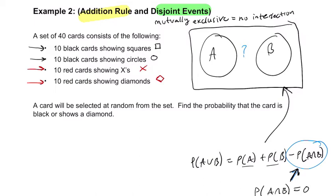It's got to be one or the other: either it's black, which is in this case showing squares or circles, or it shows a diamond here. It cannot be both. The probability that it's black is what? Well, there's 20 cards that are black - 10 with squares, 10 with circles - so 20 out of 40 cards. This is the probability that they're black plus the probability that you're getting a diamond, which is 10 diamonds out of 40.